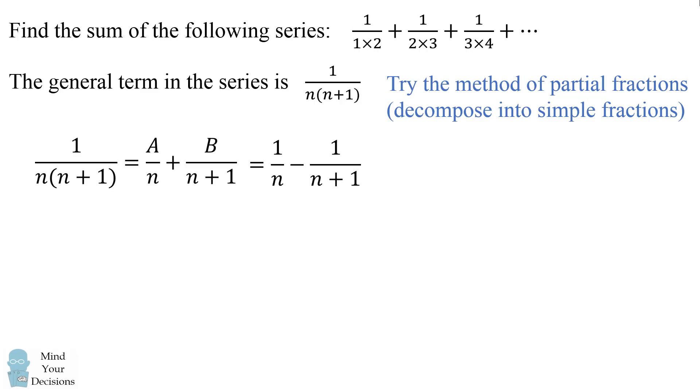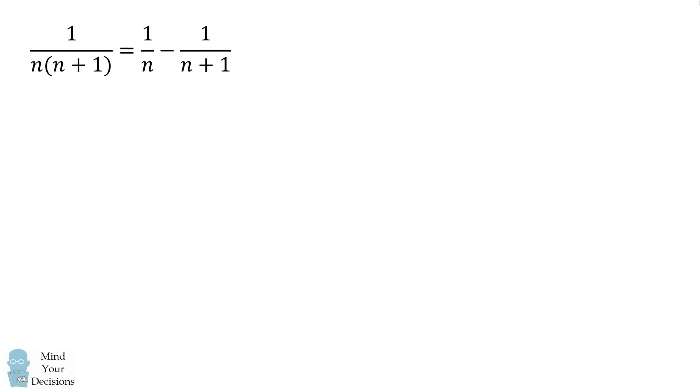So how is this going to help us solve our infinite series? Well, let's take a look at the sum of our series up to k terms. From this partial sum let's take a look at just the very first term of this sum. We have 1 over the quantity 1 times 2.